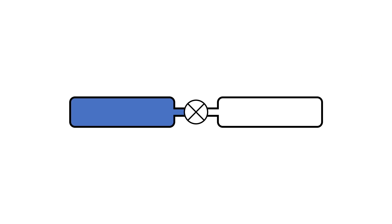We start with a simple example where we have two identical tubes attached end to end, but they are separated by a valve. We'll have tube one on the left and tube two on the right.